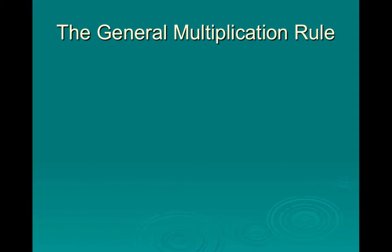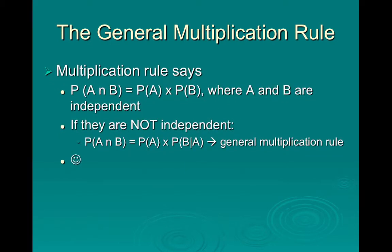Now that we know about conditional probability, we can use the general multiplication rule. The multiplication rule says P(A and B) = P(A) × P(B), but A and B must be independent — meaning one outcome does not affect the other. If they are not independent, then P(A and B) = P(A) × P(B|A), which is the probability of A times the conditional probability of B given A. That is the general multiplication rule. Oftentimes we use a contingency table or diagram, which makes it easier and we don't necessarily have to apply the formal rule as written.